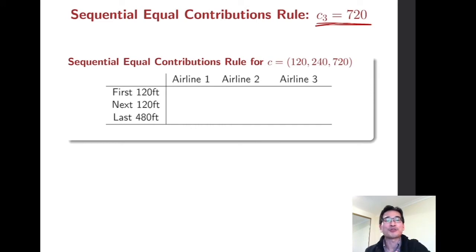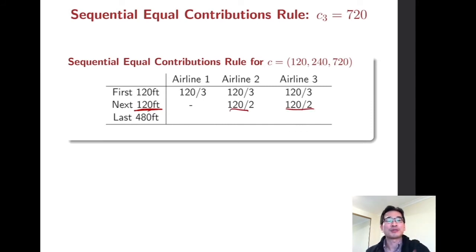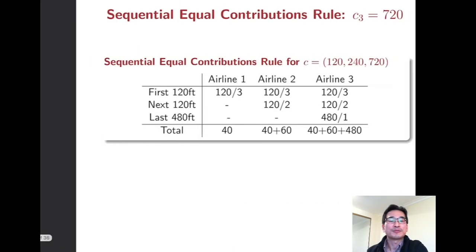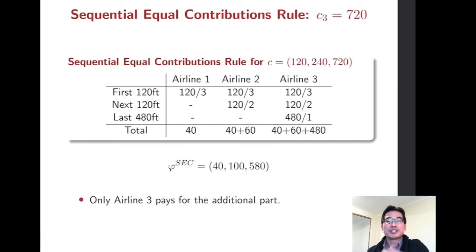We can do the same exercise with the different costs, where the largest airline requires a 720-foot runway. The first 120 feet is split equally among three players. The second 120 feet is split equally between Airline 2 and Airline 3. The remaining 480 feet is the responsibility of only the last airline. The first and second companies' payments did not change — only the last player pays more. In that sense, the sequential equal contributions rule is fairer than the proportional rule.